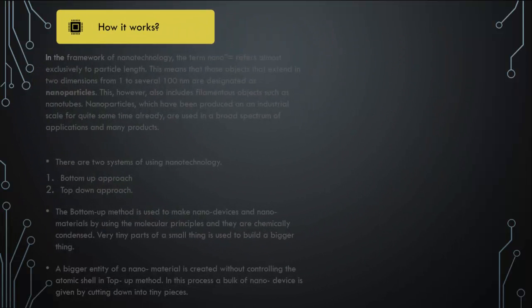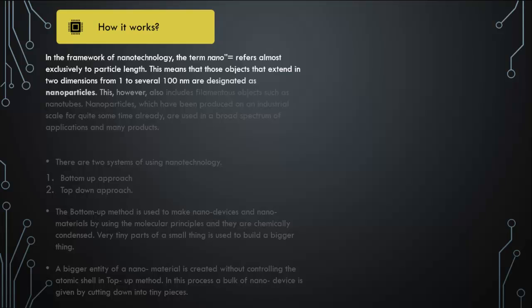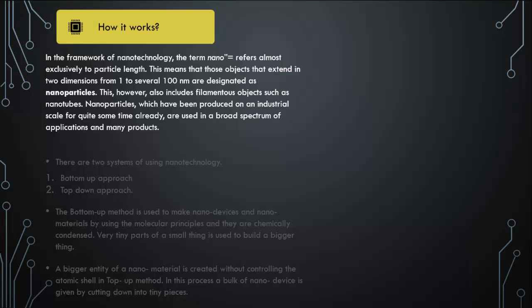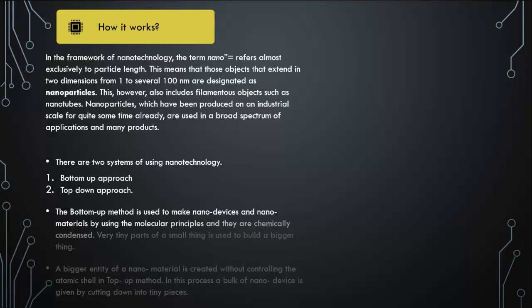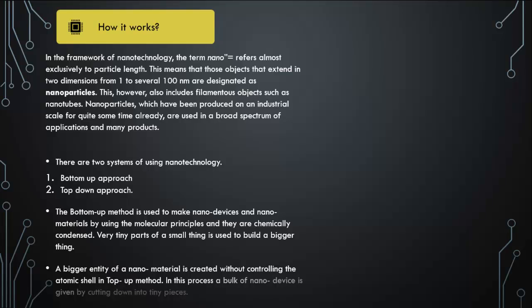In the framework of nanotechnology, the term 'nano' refers almost exclusively to particle length. Objects that extend in two dimensions from one to several hundred nanometers are designated as nanoparticles, which also includes filamentous objects such as nanotubes. Nanoparticles are used in a broad spectrum of applications and many products. There are two systems of using nanotechnology: the bottom-up approach and the top-down approach. The bottom-up method builds nanodevices and nanomaterials using molecular principles, chemically condensed from very tiny parts. In the top-down method, a bulk of nanodevice material is created by cutting down into tiny pieces without controlling the atomic shell.